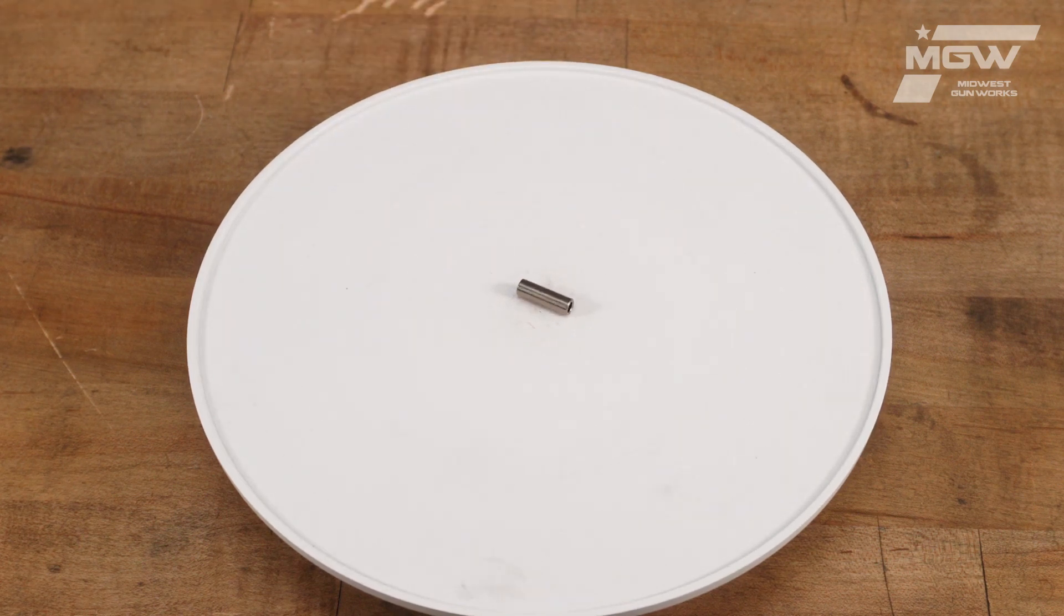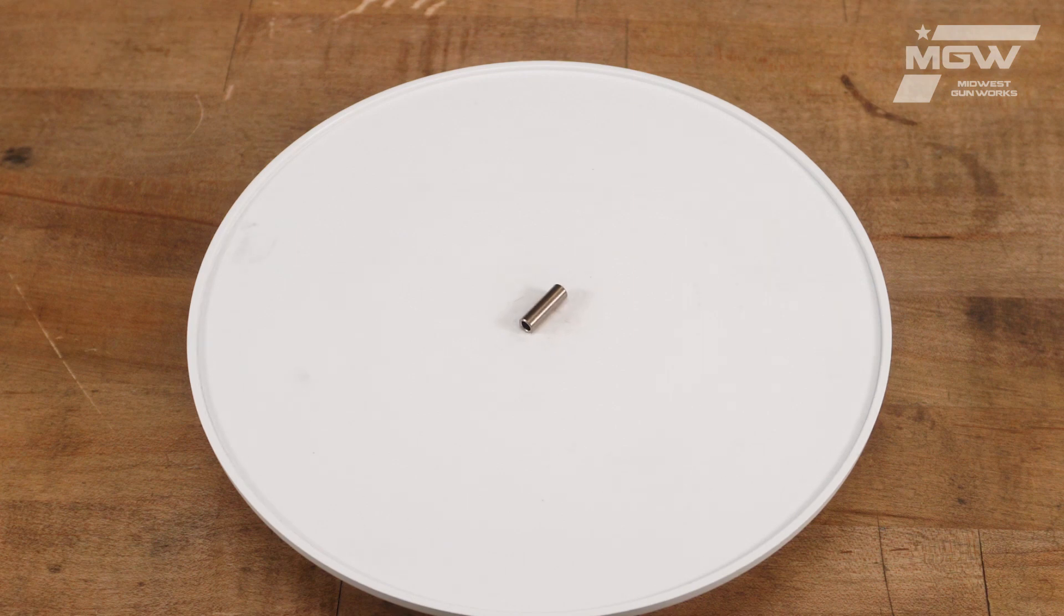The steel hammer bushing here installs through the frame and helps retain the hammer within the frame assembly.